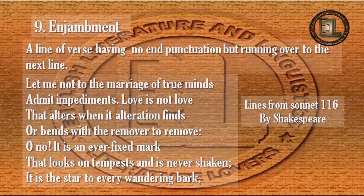'Oh no, it is an ever-fixed mark that looks on tempests and is never shaken; it is the star to every wandering bark.' The first line has no full stop, comma, or any other punctuation mark, but runs over to the second line where it completes its sense with the word 'impediment.' In the same way, the second line runs over to complete its sense with the third and fourth lines, and the fifth line runs over to the sixth line. Such continuation in poetry is called enjambment.